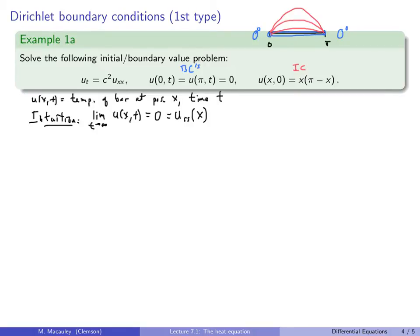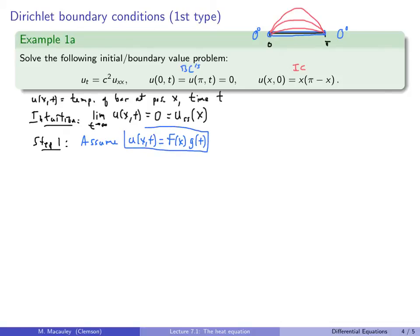Let's solve this. We're going to use the same method for every PDE: it's called separation of variables. Step one — we always assume that the solution is of the form u = f(x)·g(t). That's always going to be the first step. We're not assuming the general solution is like this; we're just assuming there is a solution like this, and we'll find many such solutions and use the principle of superposition to add them up.